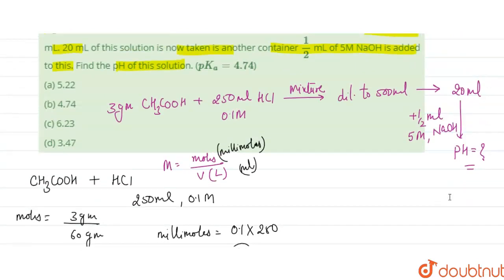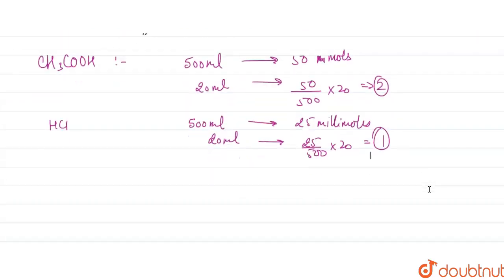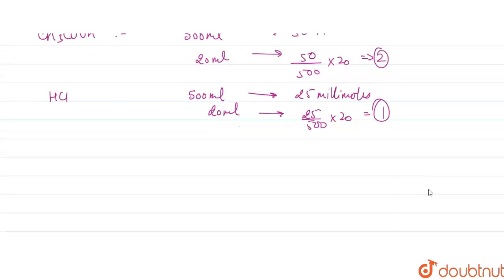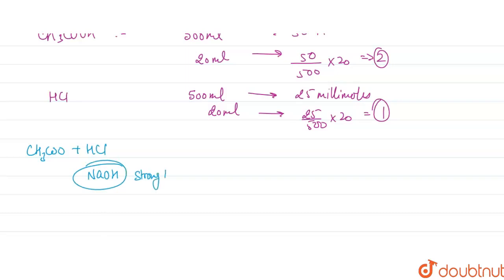Now we have added 0.5 ml of 5 M NaOH to this solution. We have CH3COOH, HCl, and we are adding NaOH. NaOH is a strong base and HCl is a strong acid.